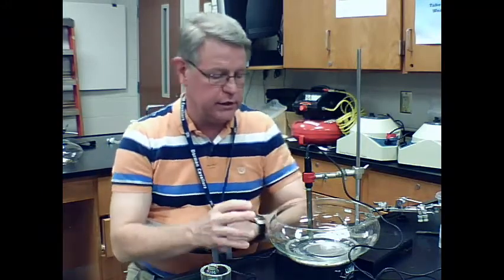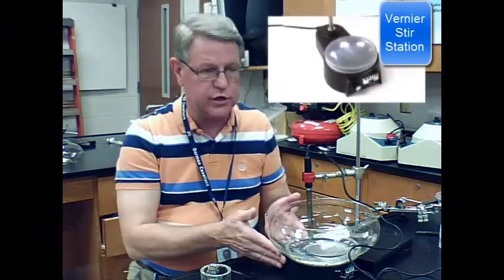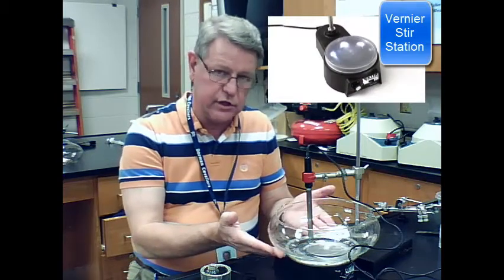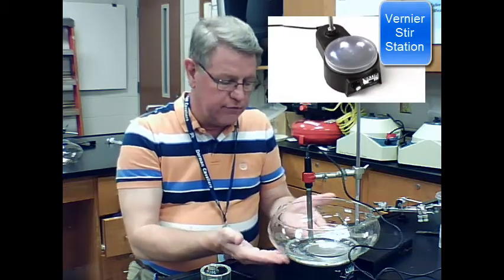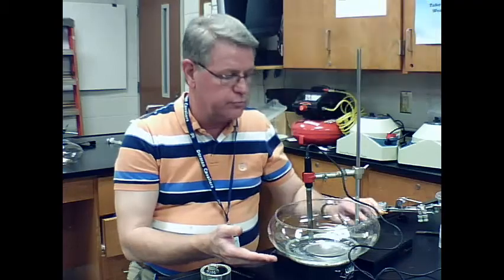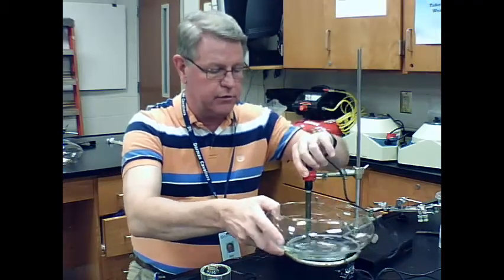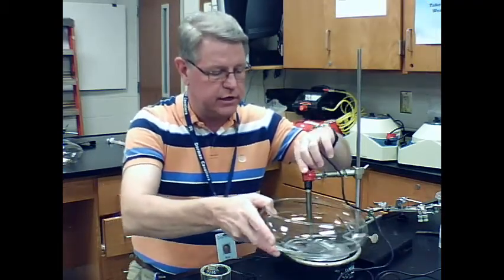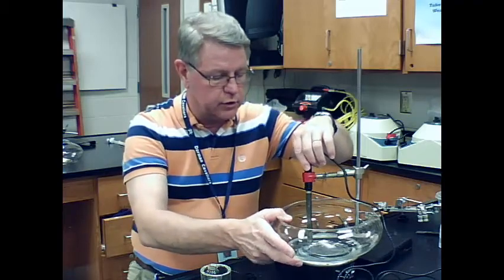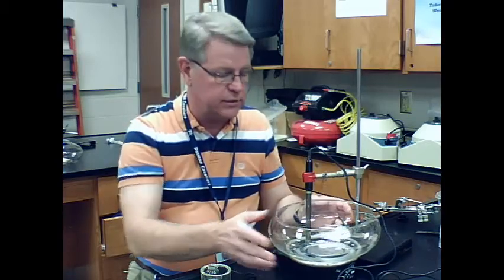So to create a pH curve, we're going to have to set up our apparatus like this. Now what I've done is I've taken a stir station and I have it up underneath this bowl. Above that I put this ring, this metal ring is designed, and I'll move this kind of a little bit out of the way so you can see that. That metal ring right there is designed, or put there,